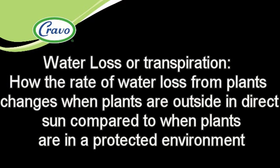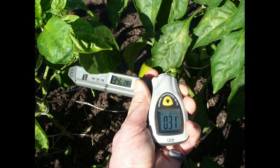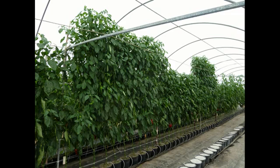Water loss or transpiration. How the rate of water loss from plants changes when plants are outside in direct sun compared to when plants are in a protected environment. In the previous video we identified that leaves in direct sun can be warmer than the air temperature, and leaves under a plastic roof can be cooler than those in direct sunlight.